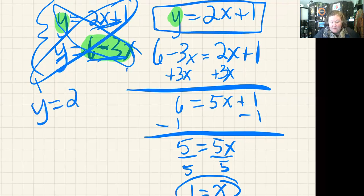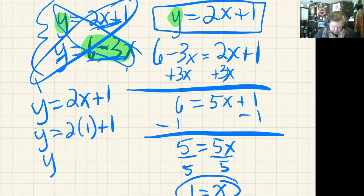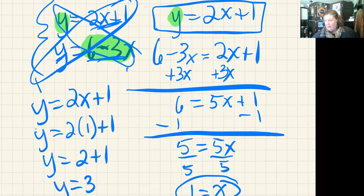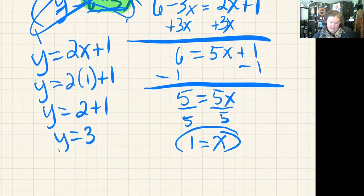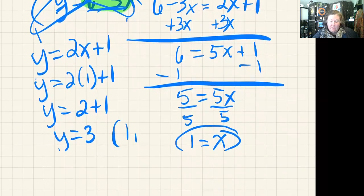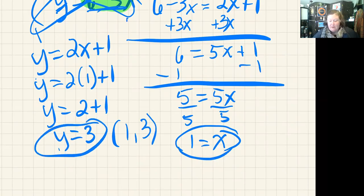y = 2x + 1. I'm going to substitute in 1 for x. And I get 1 and 3. So the answer to this system is (1, 3), or x = 1 and y = 3.